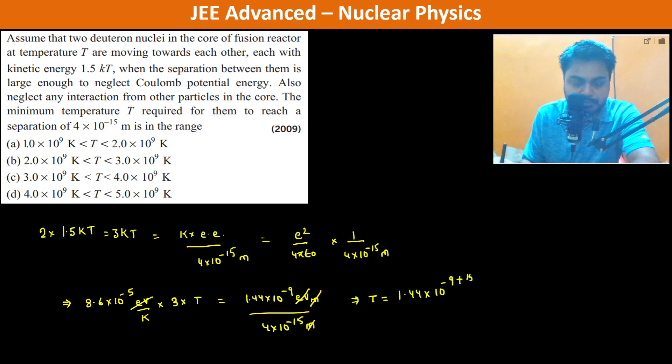So therefore the temperature becomes 1.44×10^-9 plus 15, plus 5, divided by 3×8.6×4, which is equal to 1.44×10^11 divided by 3×8.6×4. So this is 0.36×10^11 divided by 3×8.6, this is 0.12.